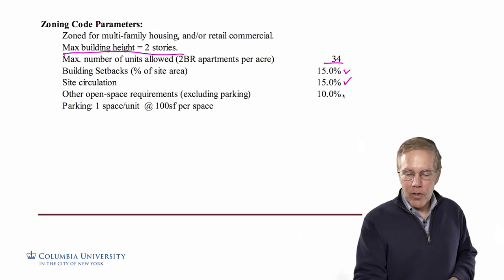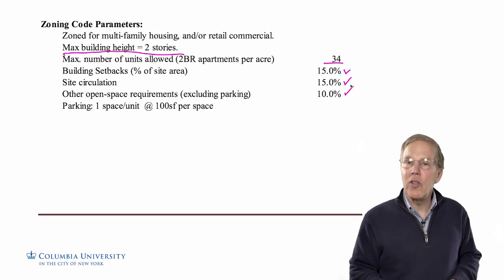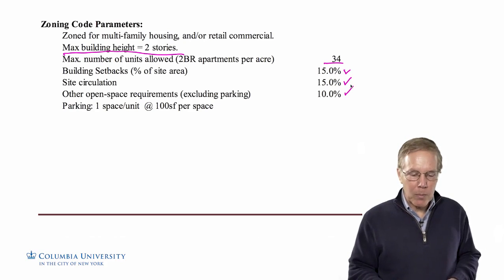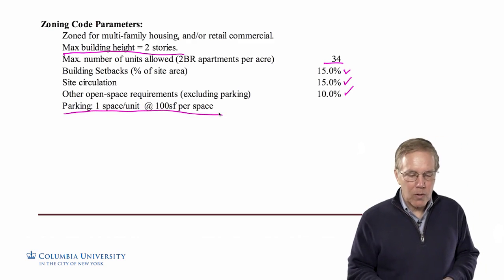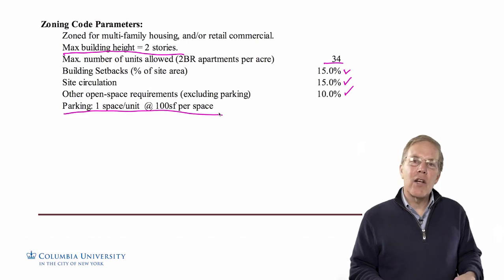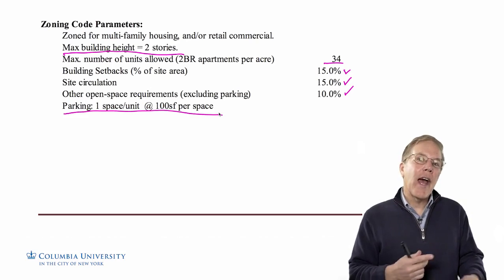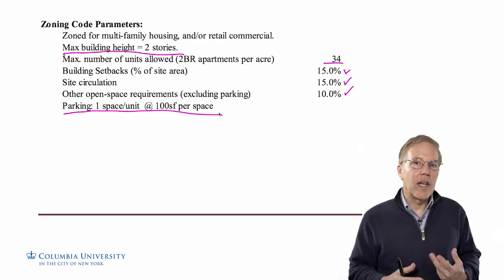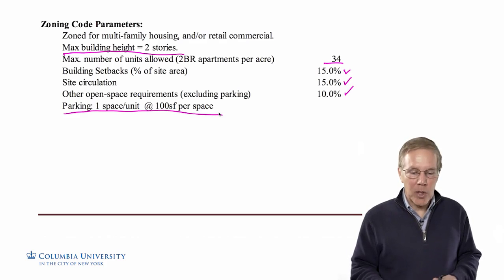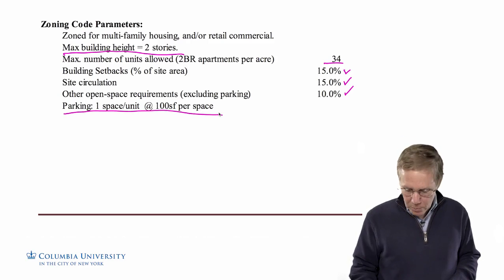There are various other local code open space requirements, not including parking, that take up about 10% of the acre. For parking, the local zoning code says they need 100 square feet per space, and one parking space per two-bedroom unit. CAG is going to double that requirement because they've found that for their demographic — typically two graduate students per apartment — each student wants their own parking space.